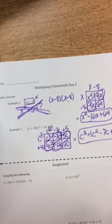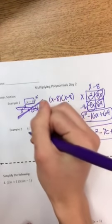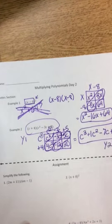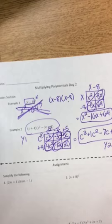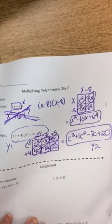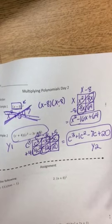And, again, you could put the problem in y1 to check yourself. And, the answer in y2 and go to the table. So, there should not be a single problem on your assignment that you don't get correct. Because, you should know right away if you got it right or not by checking it.